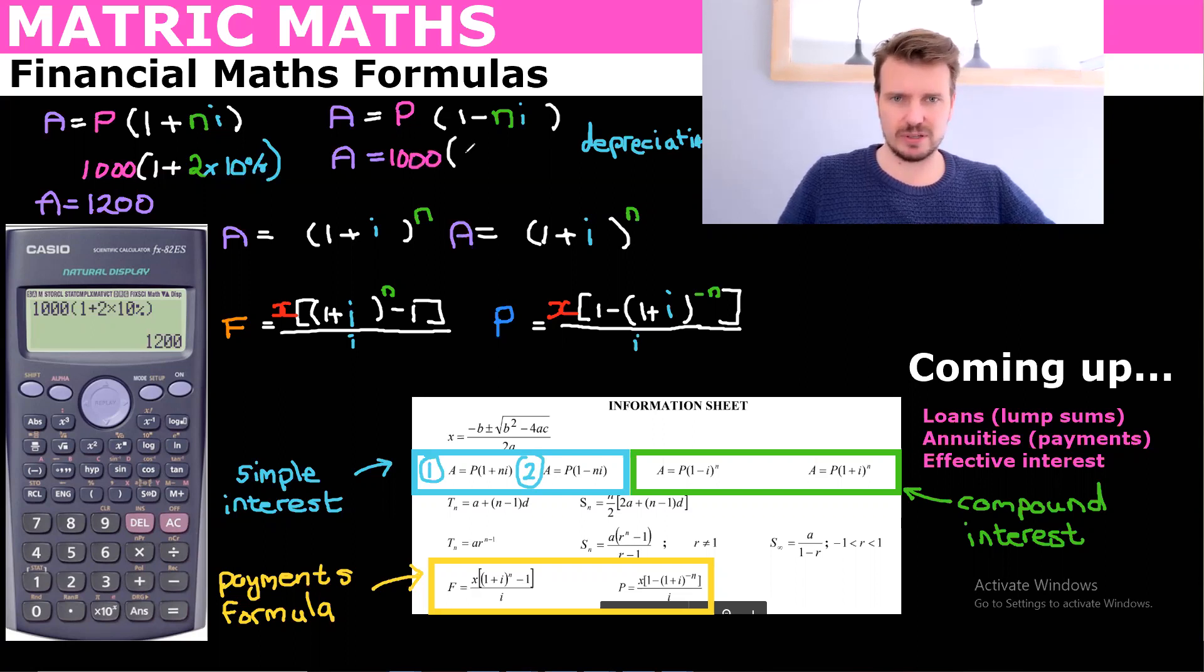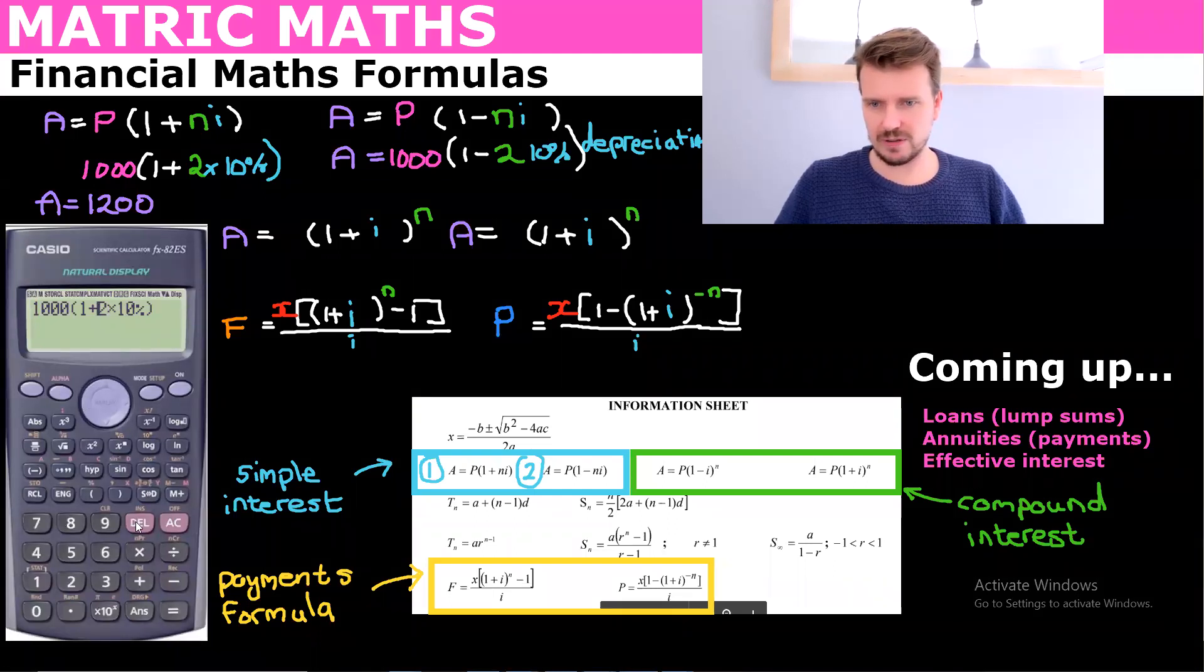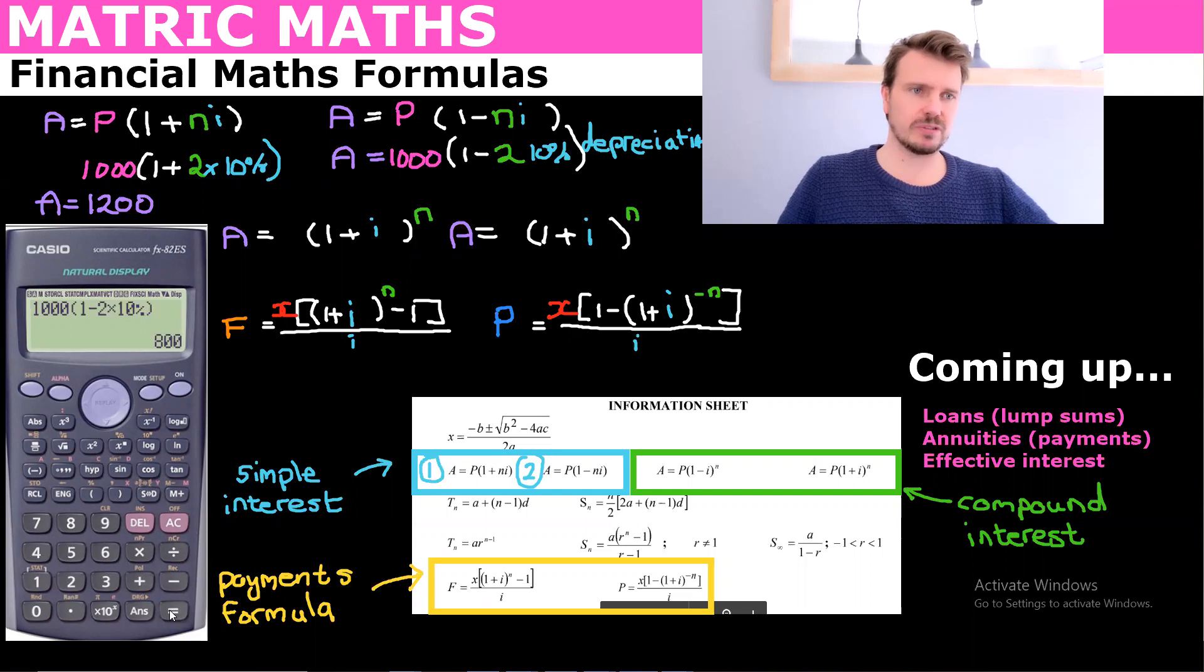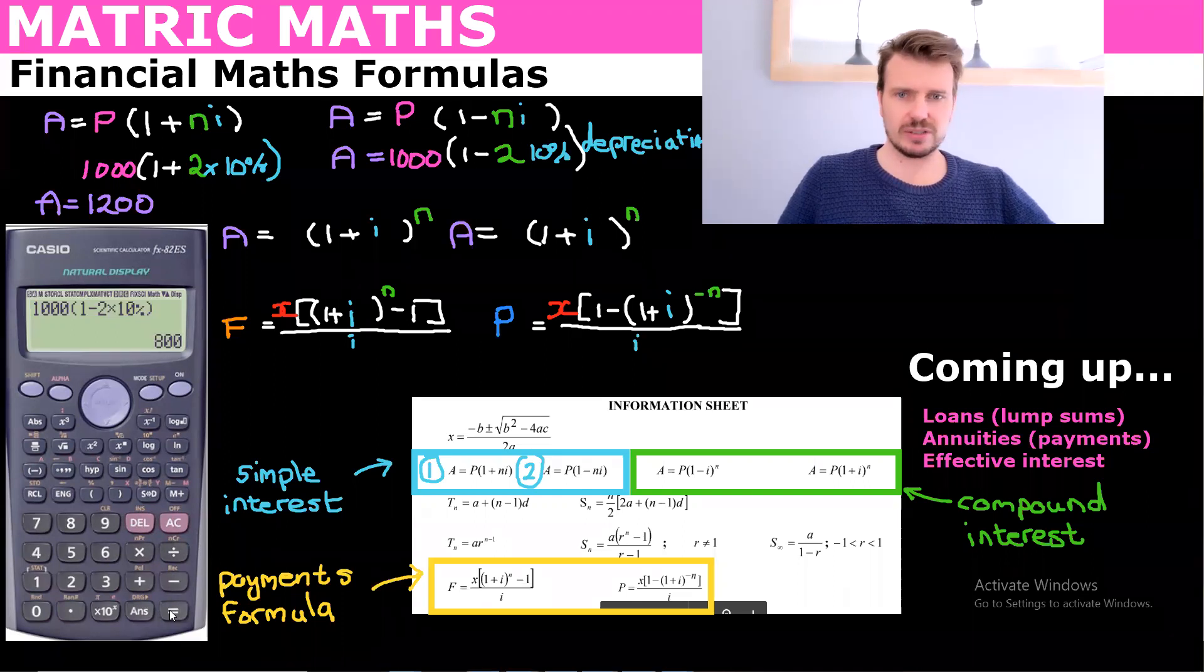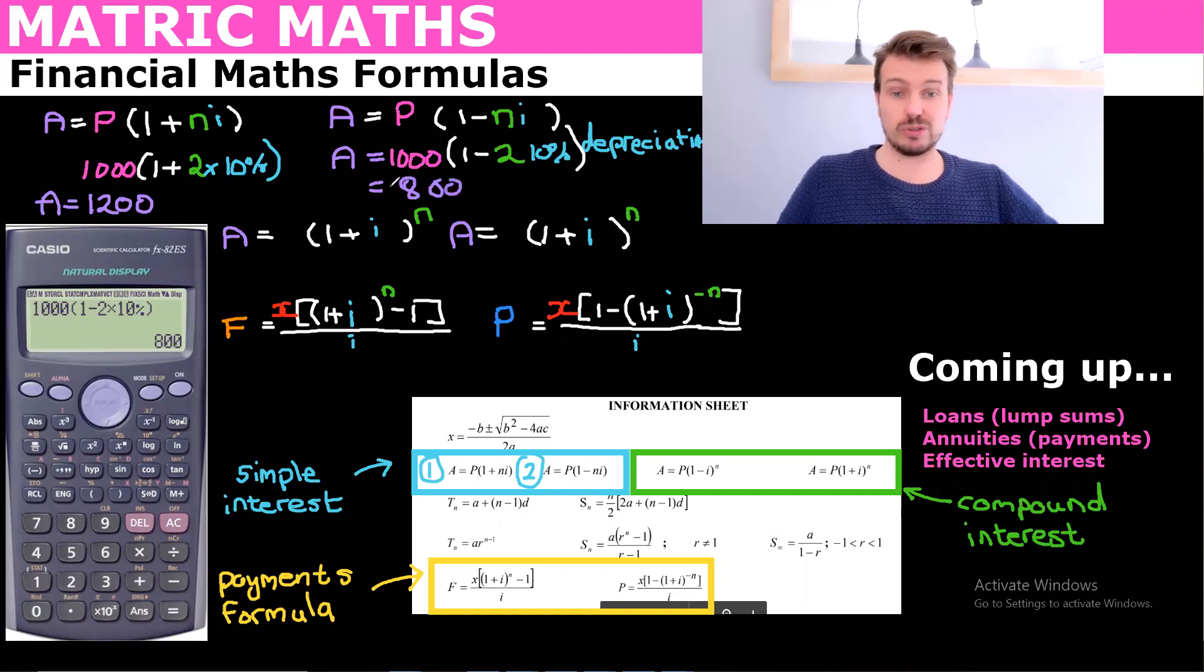It's going to come down by 200. And so when we put minus and we'll say N is 2 and the interest is 10%, when we put that into our calculator, we're going to get 800. So I can just change this to a minus and we should get 800. And we do. So that's simple interest. Most of you would have done it as early as grade nine. But I'm not going to assume that you know, so now I assume that you do know because you've seen it here. If they ask for it in rands, we can just do this. That's the first one, simple interest, very basic.